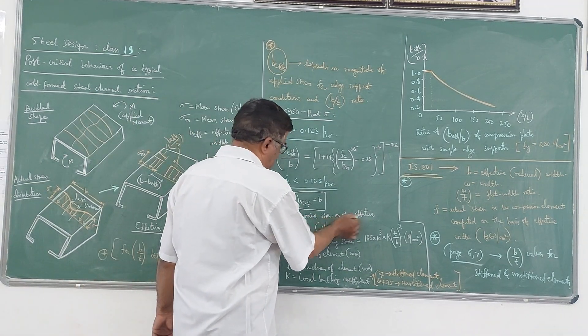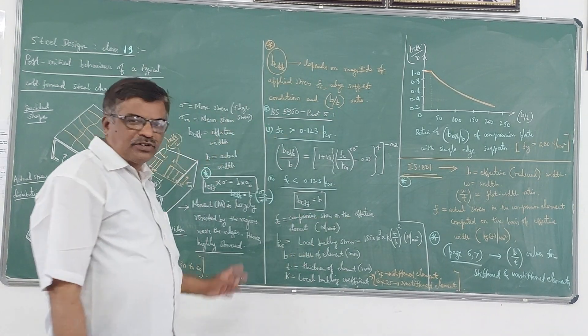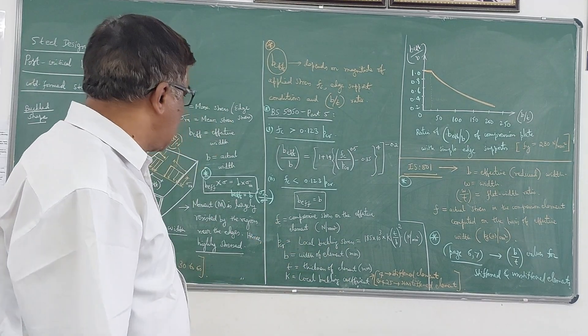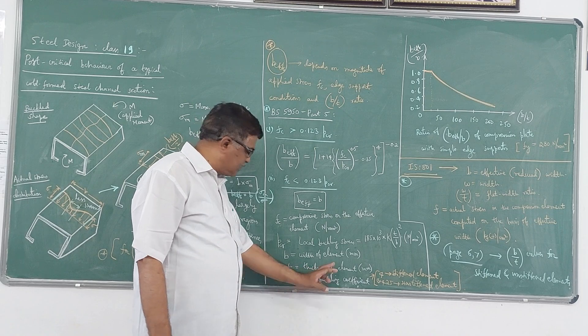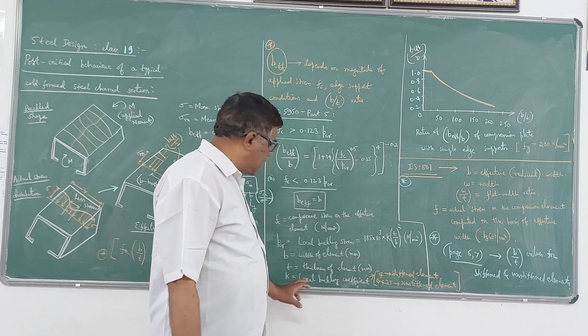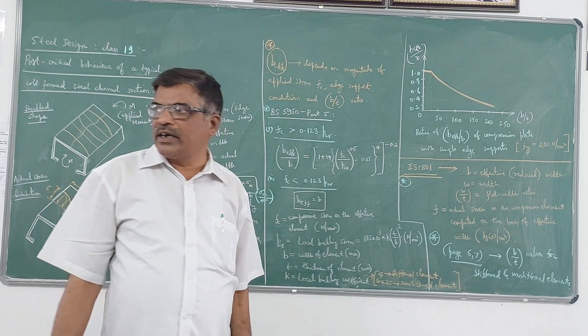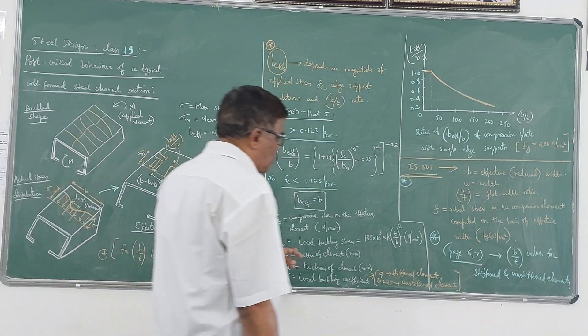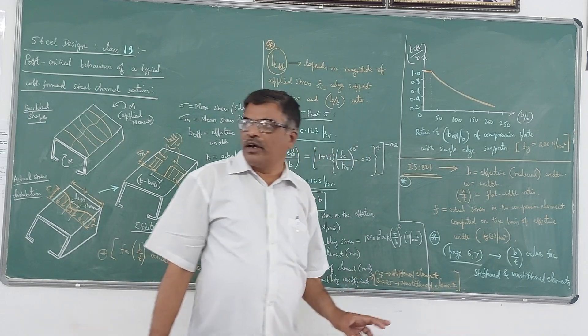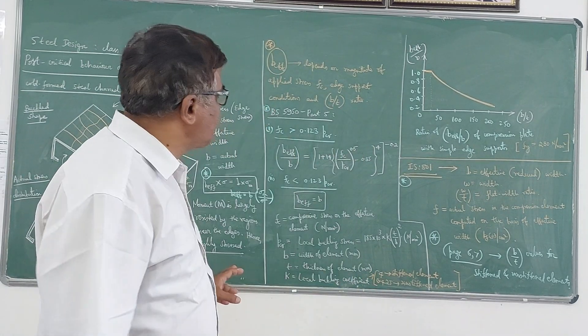185 times 10^3 times K times (T/B)^2 which is in Newton per mm square. And Fc is the compressive stress on the effective element which is also in Newton per mm square. B is the axial width of the element, T is the thickness of the element. And here K is the buckling coefficient, local buckling coefficient which I have explained in the last video, whose value is taken as 4 for stiffened element and 0.425 for unstiffened element.